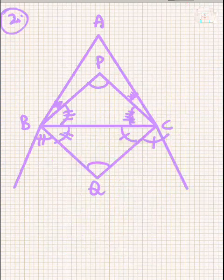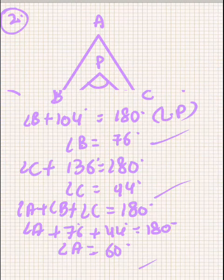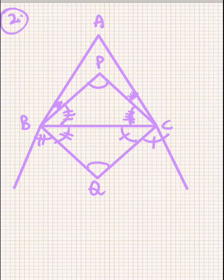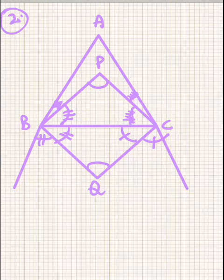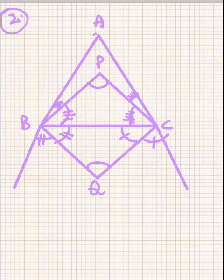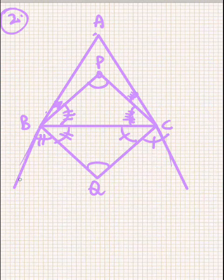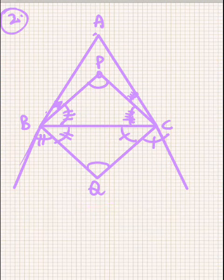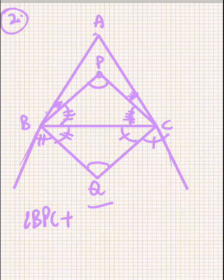Now in question number 2, we are given that in triangle ABC the internal bisectors of B and C meet at point P. So this is triangle ABC and its internal bisectors meet at P. Then the external bisectors of B and C meet at point Q. So these are the external bisectors of B and C which meet at point Q.